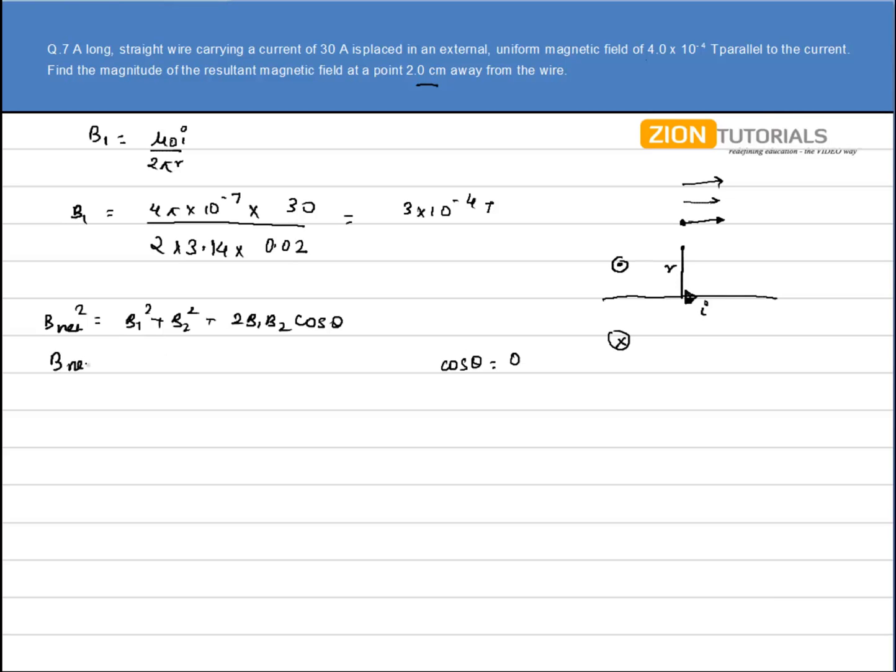We have B_net is equal to (B₁² + B₂²)^(1/2). On substituting the value I have 3×10^-4 plus 4×10^-4 whole square of each and whole to the power 1/2.